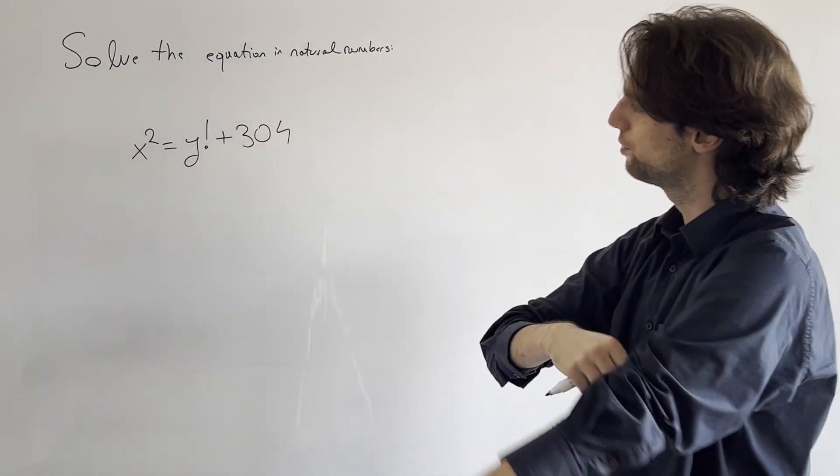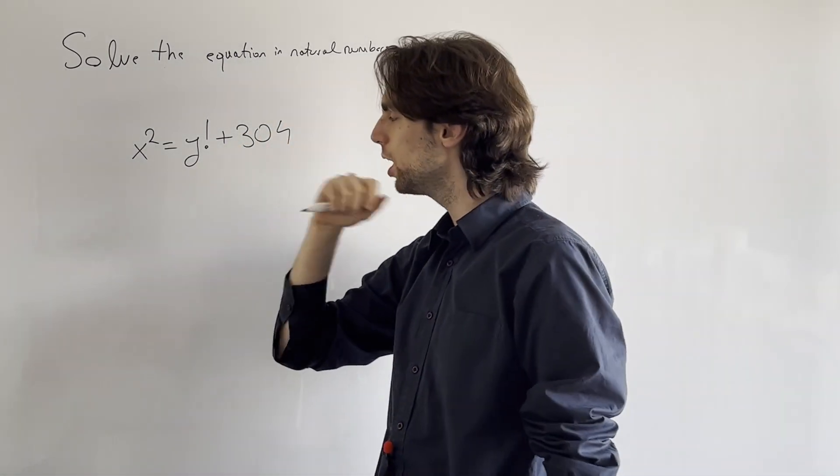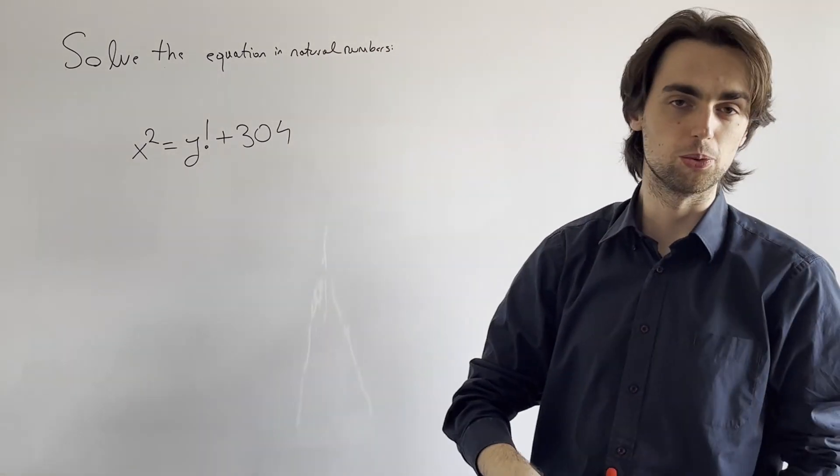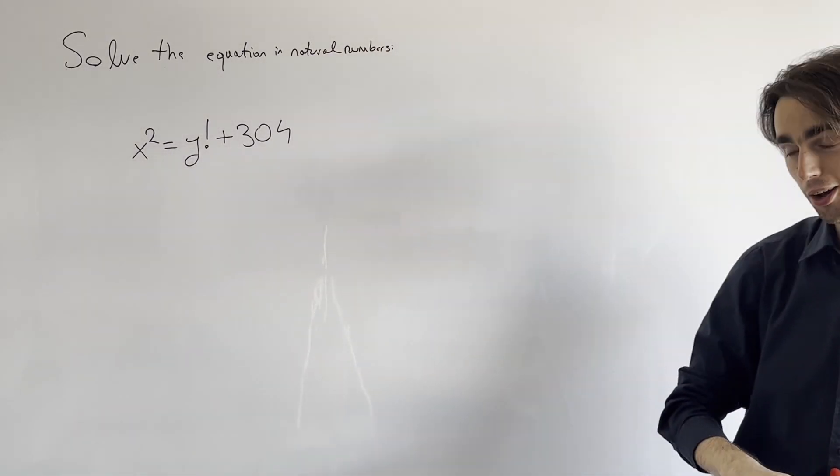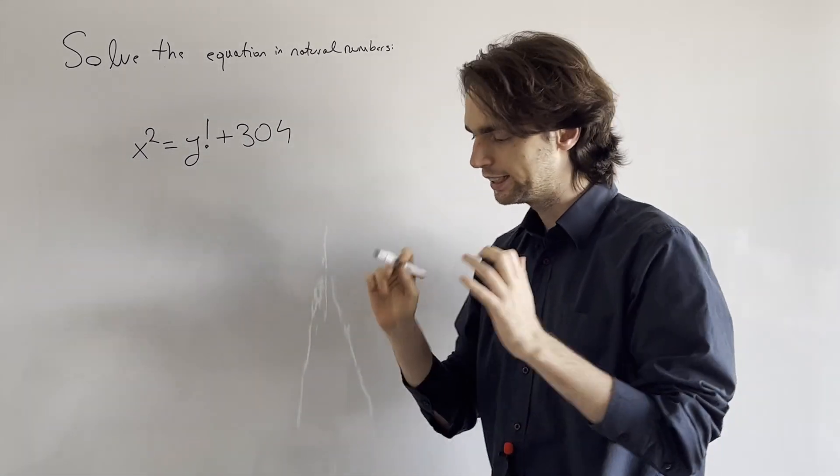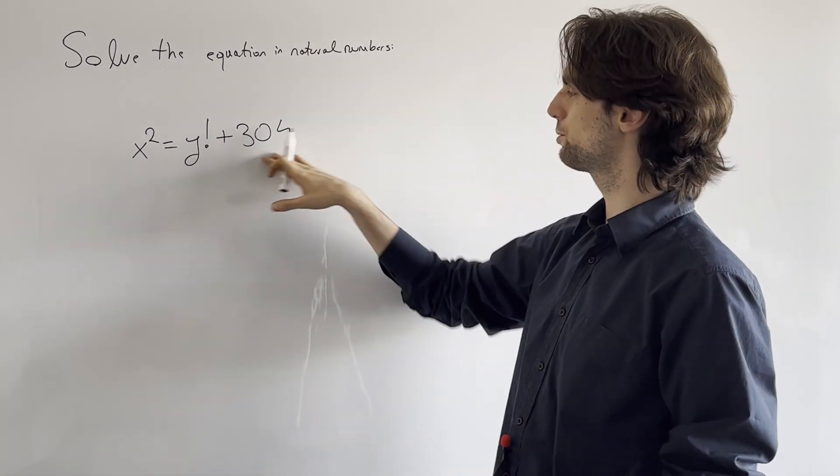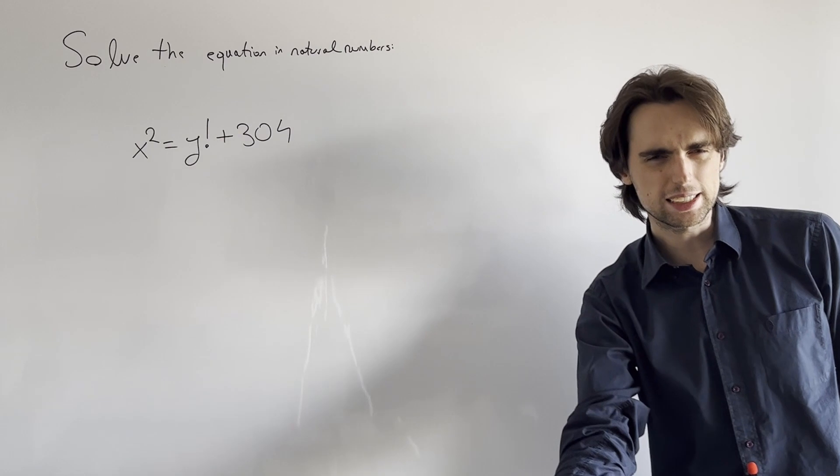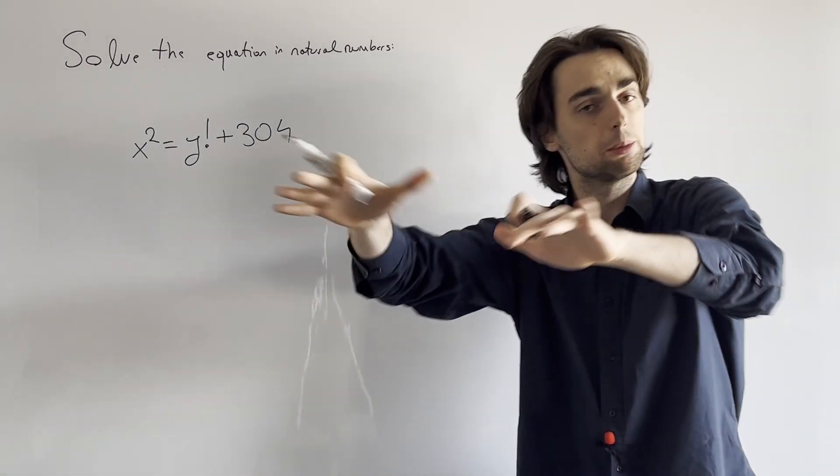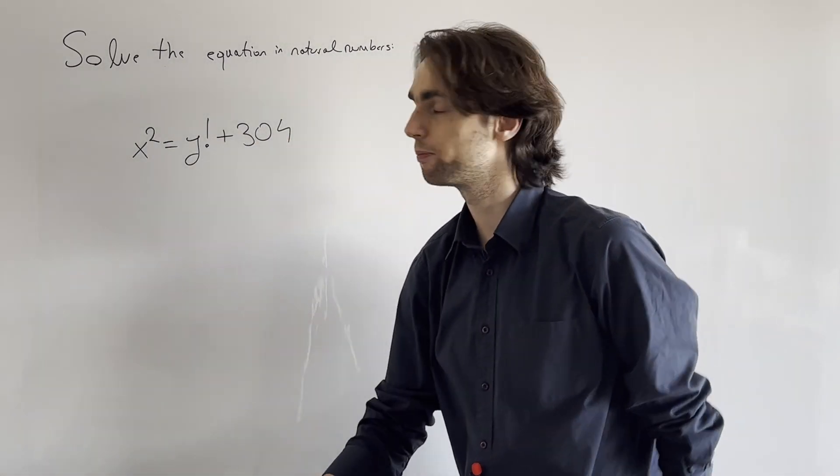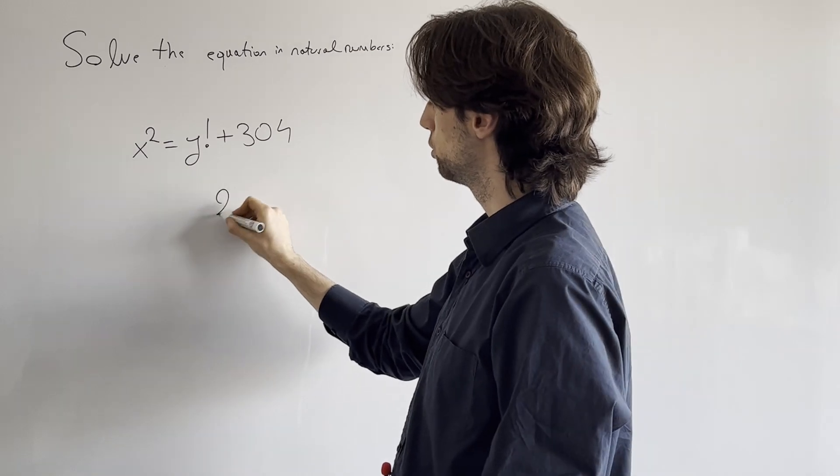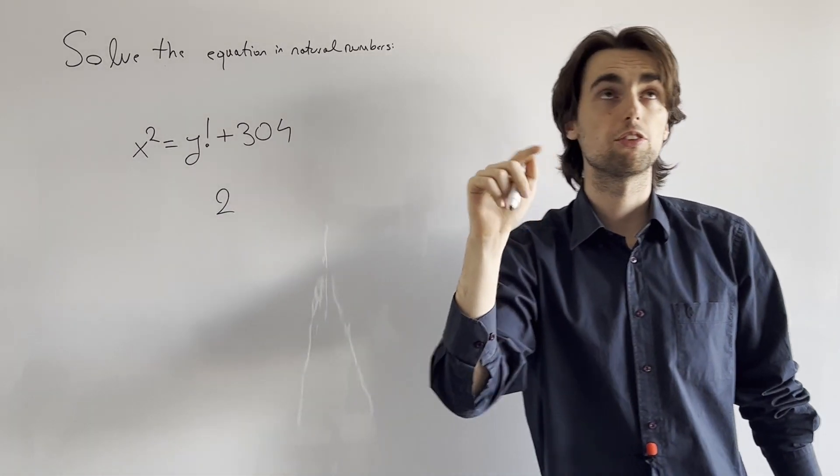So we must find all pairs x and y such that this is true. How are we ever going to do that? What are we focusing on? Let's see. So the first thing is this 304. What is it? You need to get some information to be able to solve a problem. So 304, that's like 2 times 152.